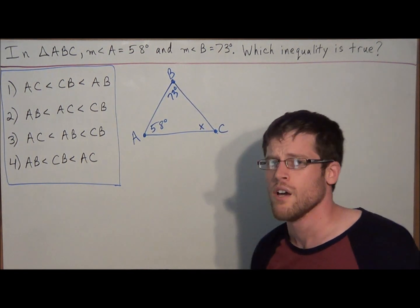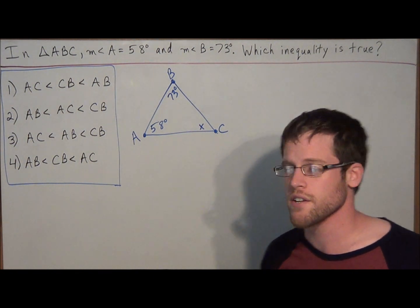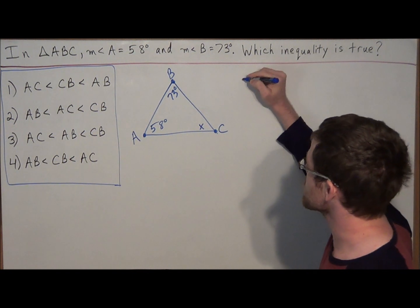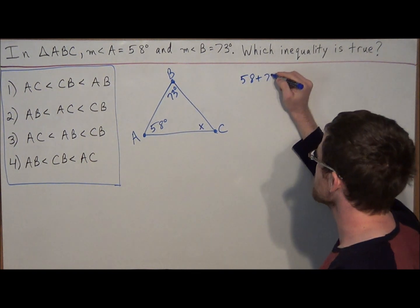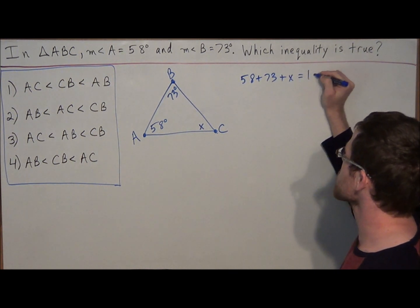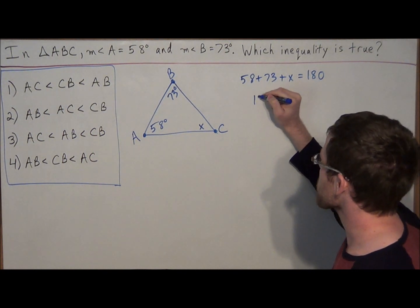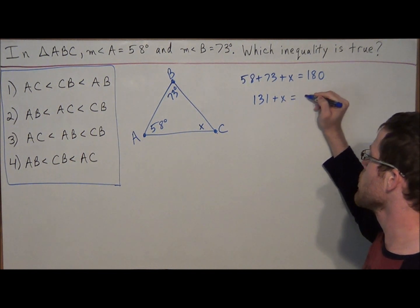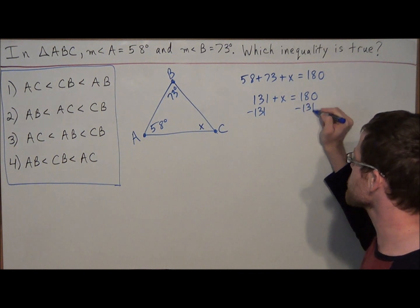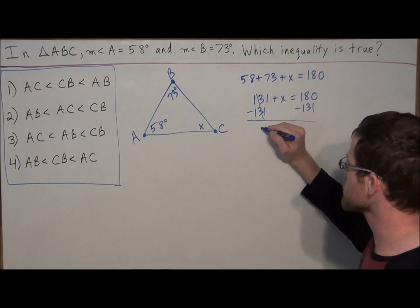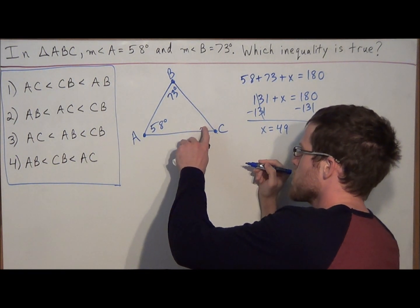The missing angle we could call x and we can use this concept that the sum of the interior angles of any triangle is 180 degrees. So we can set up 58 plus 73 plus x and set this equal to 180. When we simplify, 58 plus 73 is equal to 131. So then to solve this we're subtracting 131 from both sides, and this tells us that x is equal to 49. So we go to our diagram and we can replace x with 49 degrees.